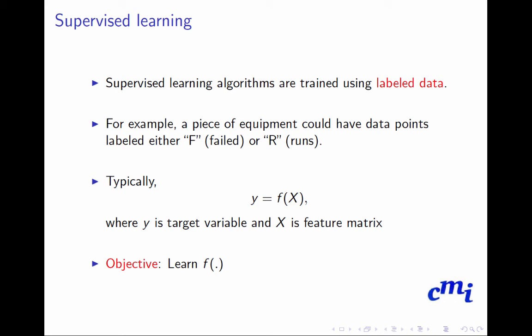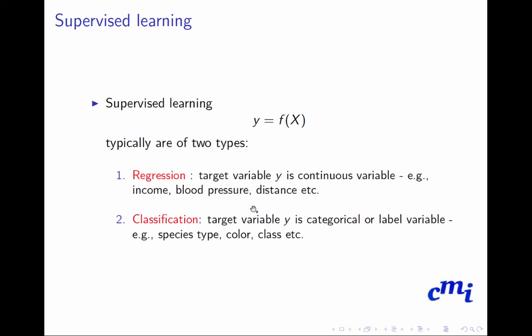In typical supervised learning, we all know there will be a labeling of the data. If you have a piece of equipment with data points labeled either fail or it runs, then you want to predict Y as a function of X, and you want to learn the function. Given the X, all the features, you want to predict the Y. If the Y is a continuous variable - for example, income, blood pressure, distance - then it's a regression problem. If the Y is a categorical or label variable - say species type, color, class - then it's typically a classification problem. If it is binary classification, it's a binary classification problem. If it has different types of levels like color or species type, then it's a multi-class classification problem.